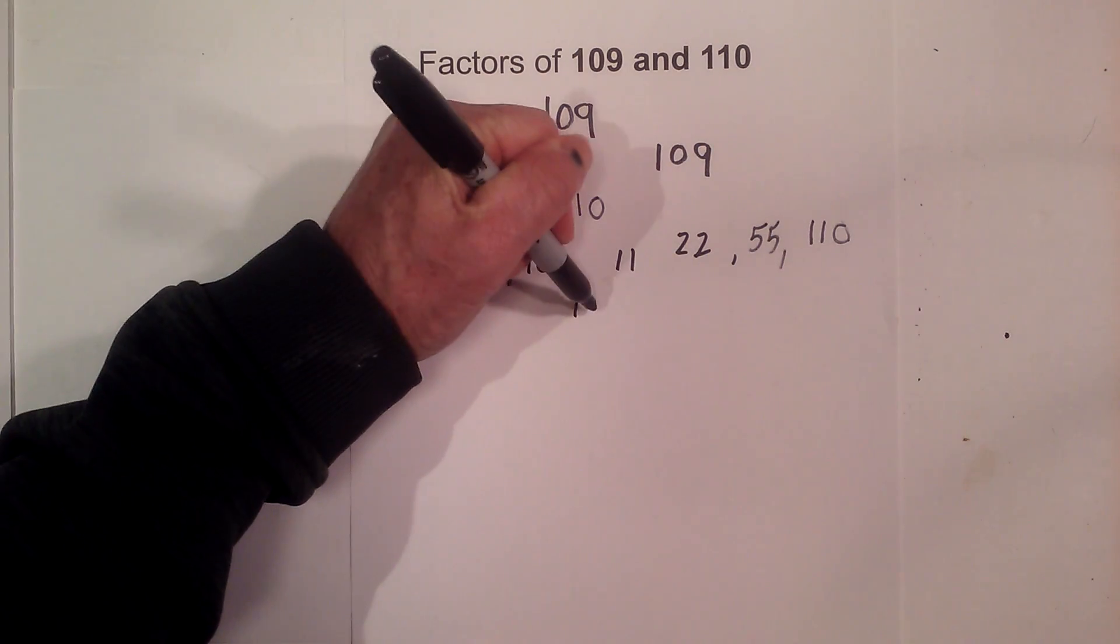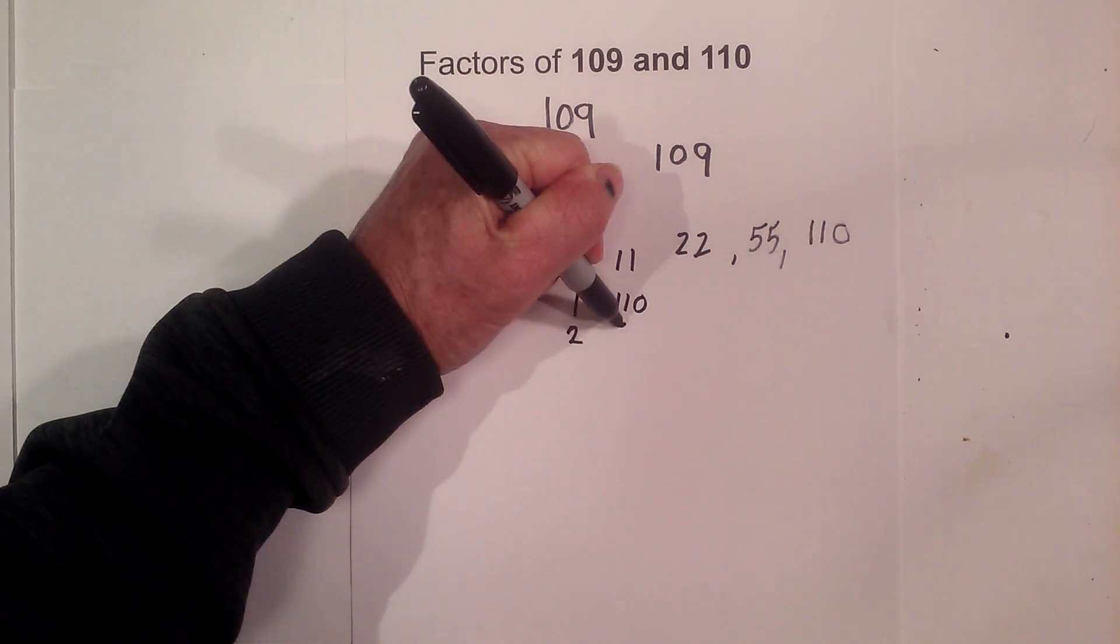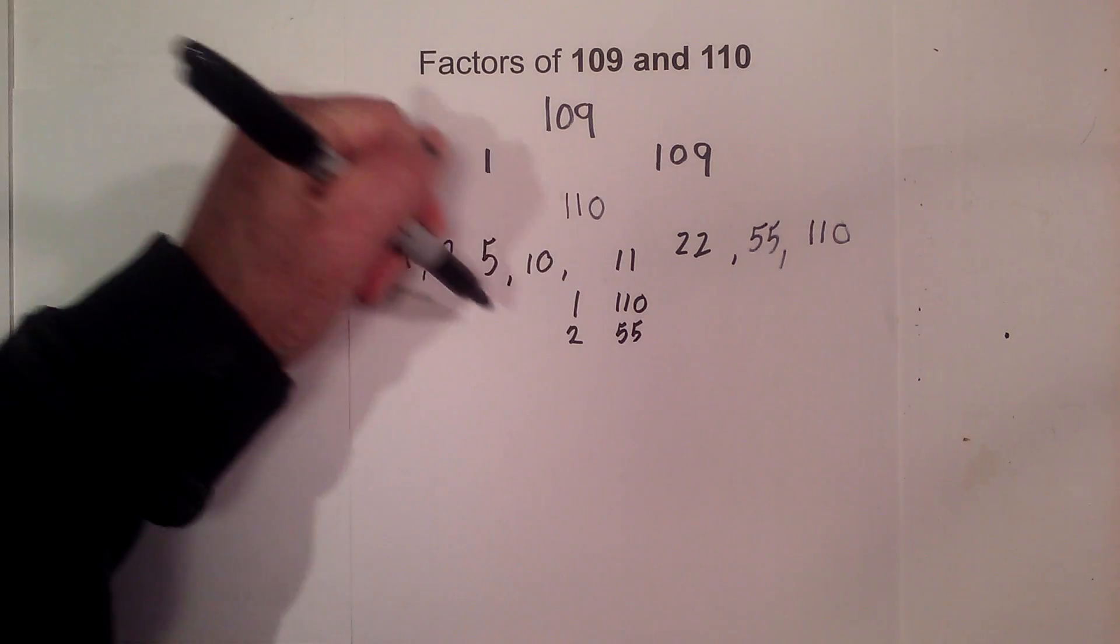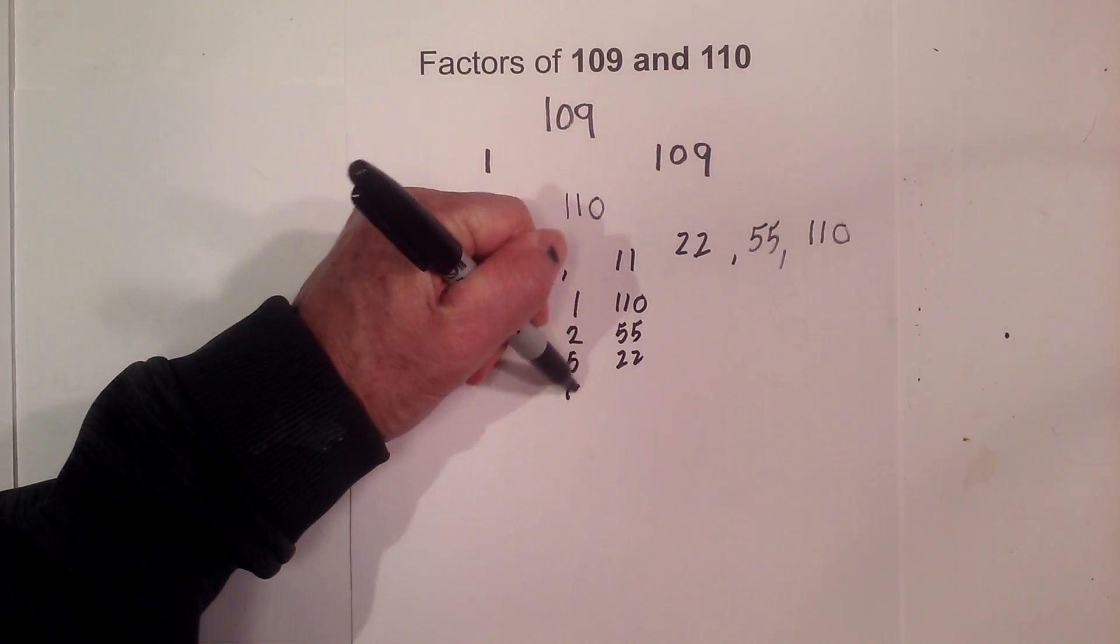If you would like to see them in pairs, it is 1 times 110, 2 times 55, 5 times 22, and 10 times 11.